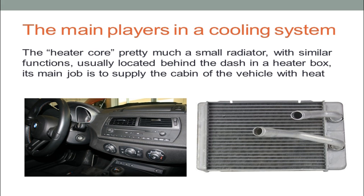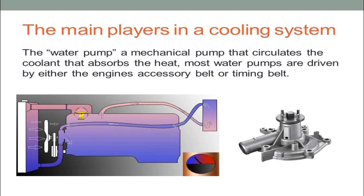The heater core is pretty much a small radiator with similar functions, usually located behind the dash in a heater box. Its main job is to supply the cabin of the vehicle with heat. The water pump is a mechanical pump that circulates the coolant that absorbs the heat. Most water pumps are driven by either the engine's accessory belt or the timing belt.